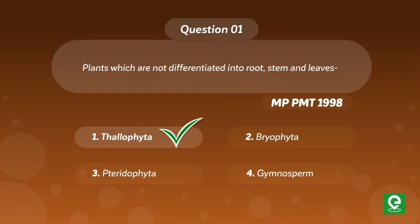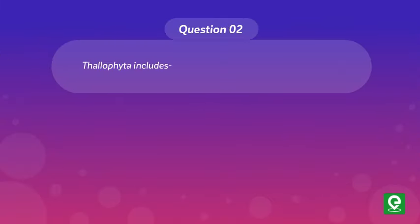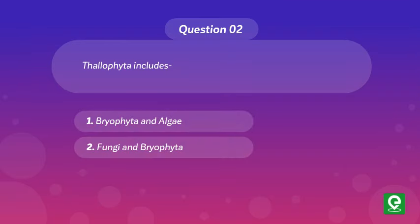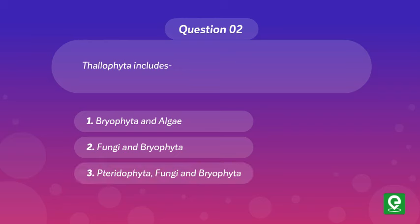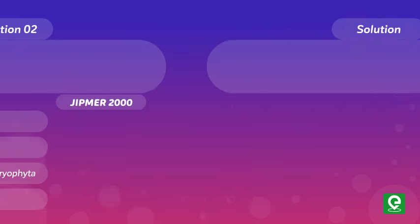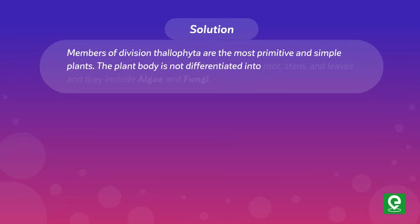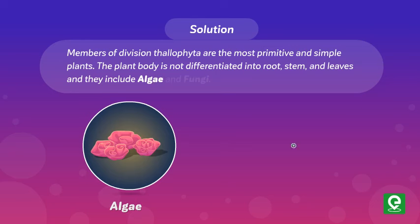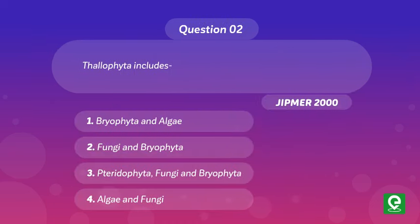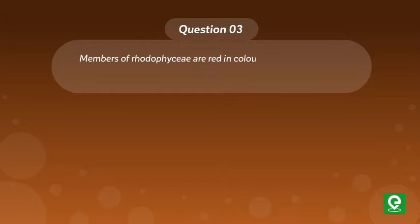Question 2 (JIPMA 2000): Thallophyta includes — (1) Bryophyta and algae, (2) Fungi and Bryophyta, (3) Pteridophyta, Fungi and Bryophyta, or (4) Algae and Fungi? Solution: Members of division Thallophyta are the most primitive and simple plants; their plant body is not differentiated into root, stem, and leaves, and they include algae and fungi. Hence option four is correct.